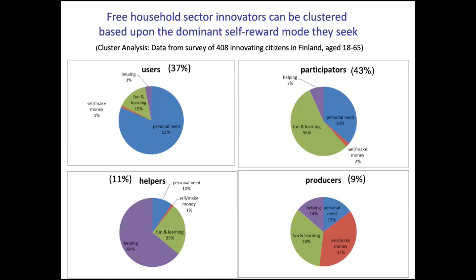They innovate because they're self-rewarded - they're doing it for themselves. In this sample from Finland, a cluster analysis divides the total population of innovating users by their biggest motivation. They have a mix of motivations. Those in the upper left are people who need it for themselves - if you make something for yourself and use it, you're self-rewarded; you don't have to sell it to anybody. On the upper right, a lot of people benefit from the fun and learning of innovating.